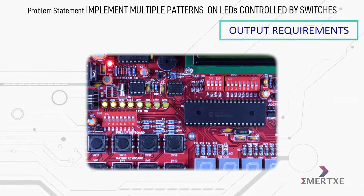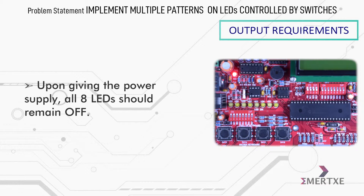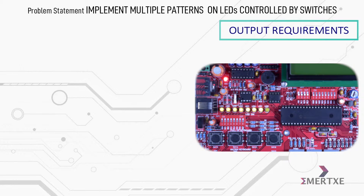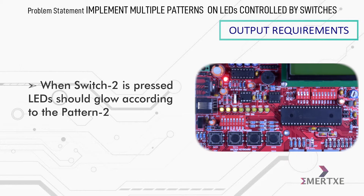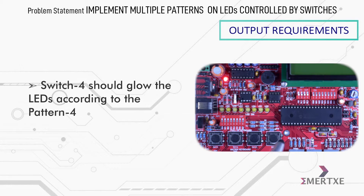As far as output requirements are concerned, you can see 8 LEDs on the board. Upon giving power supply, all 8 LEDs should remain off. When you press switch 1 on the digital keypad, LEDs should glow according to pattern 1. Similarly, pressing switch 2 activates pattern 2, switch 3 activates pattern 3, and switch 4 activates pattern 4.